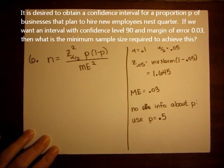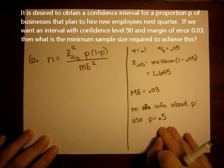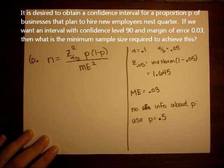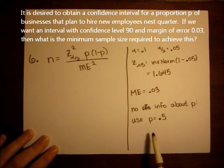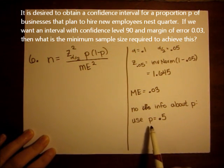And when I do this, when I use P equals 0.5, it's going to make N a little bit larger than any other proportion, so this is always our safe proportion to use. So when you have no guess what the proportion is, always use 0.5, or 50%.